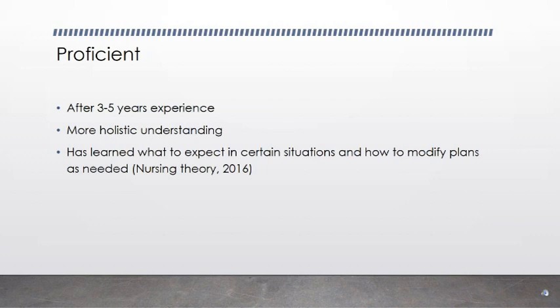The fourth stage is known as the Proficient Stage. This nurse has 3-5 years of experience in the same area and has learned what to expect in certain situations and how to modify plans as needed. In general, the proficient nurse has a more holistic understanding of a situation.